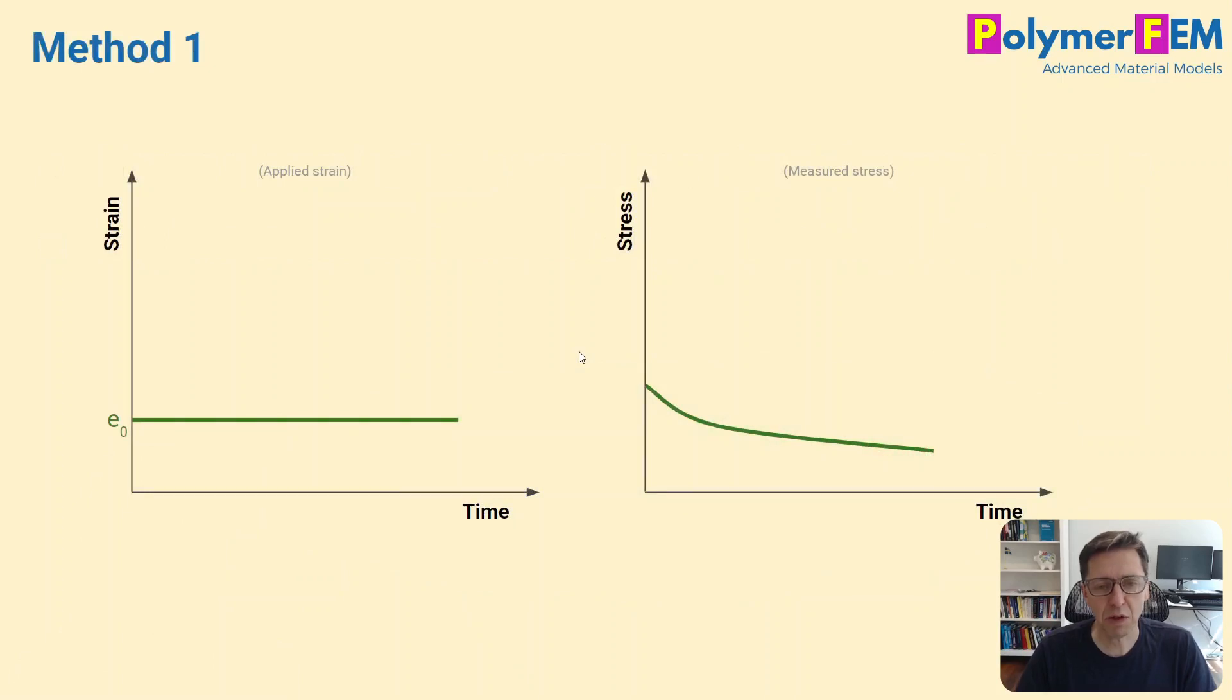And one way to show that is method one here. So I take my specimen and I pull on it to a strain. I basically apply a quick jump in strain and I hold the strain constant. What will happen is of course the stress will go up very rapidly and then start relaxing over time.